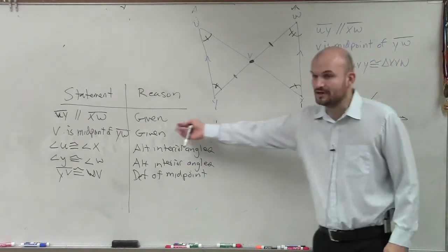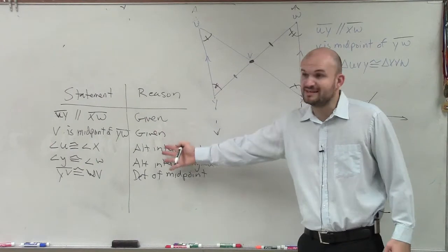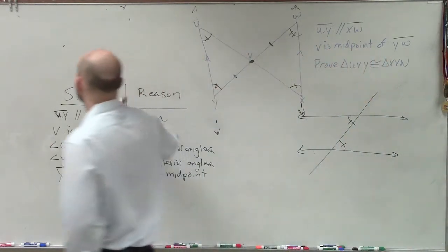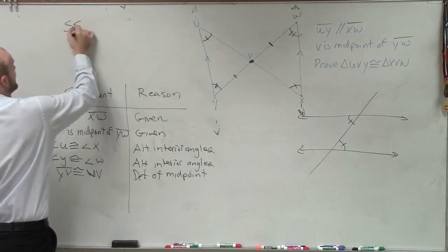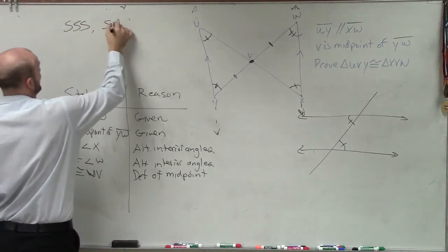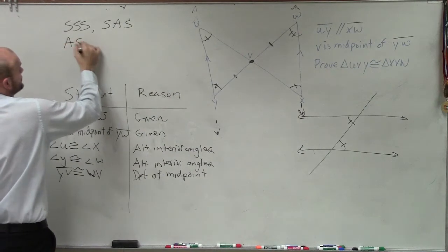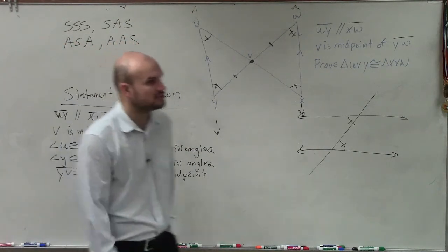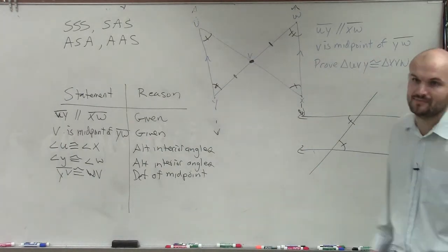So now we have given our, we have two statements. We've given three other statements. And the only way for us to prove that two triangles are congruent that we've talked about in class is side side side, side angle side, angle side angle, and angle angle side.